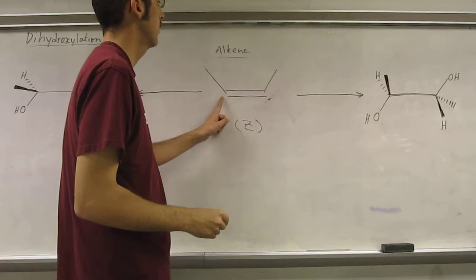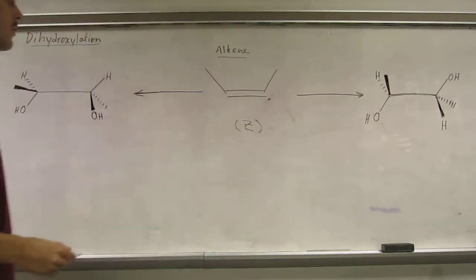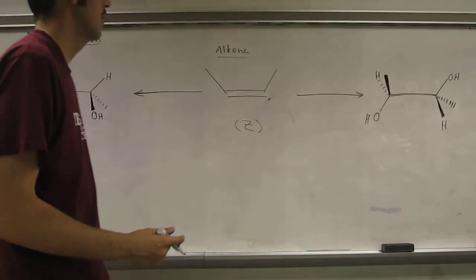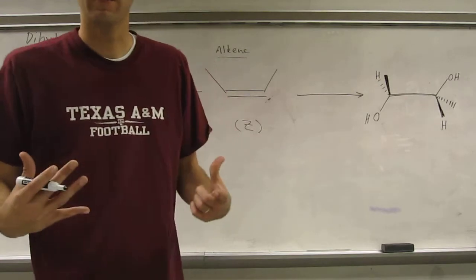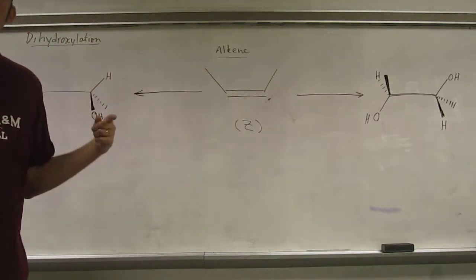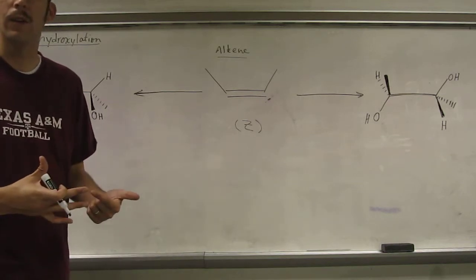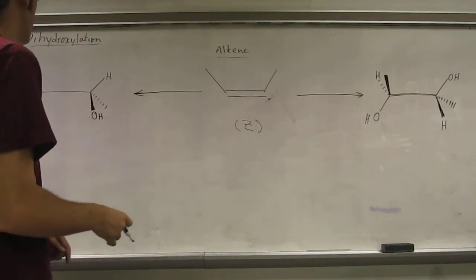To be a syn-hydroxylation, you can have a syn or an anti-hydroxylation. To be a syn-hydroxylation, you want the OHs to be put on the same side. To be anti, you're going to have them put on opposite sides.